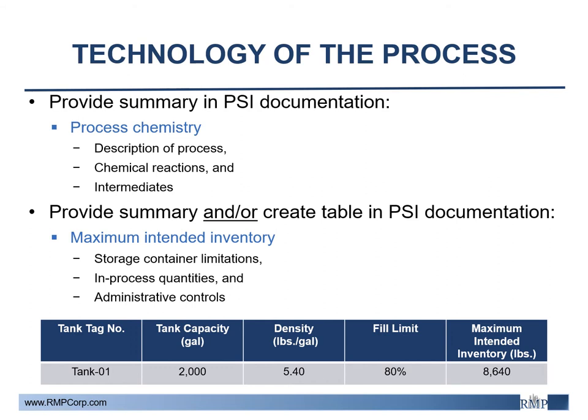The requirements of the next section, Technology of the Process, can be documented in multiple ways. Process chemistry is best documented in a summary included in the PSI document. This includes a description of the process, chemical reactions that can take place, any side products and intermediates created during the reaction, the use of catalysts, and if any undesirable chemical reactions can occur. Maximum intended inventory can also be documented in a summary, or an organized table can be created and included in the PSI documentation. The requirements of this item are to summarize storage container limits, in-process quantities, and administrative controls such as level switches.